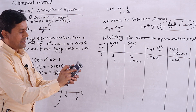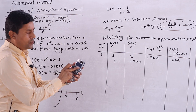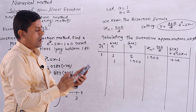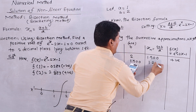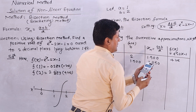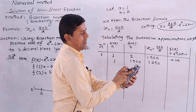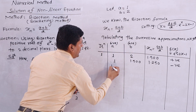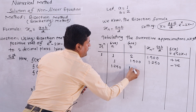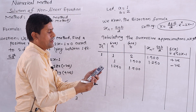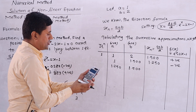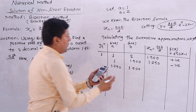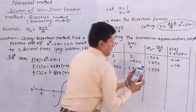Iteration 2: a = 1, b = 1.5. x_n = (1 + 1.5) / 2 = 1.250. Evaluating f(1.250) gives a negative value. So I replace a with 1.250. Iteration 3: a = 1.250, b = 1.500. x_n = 1.375.